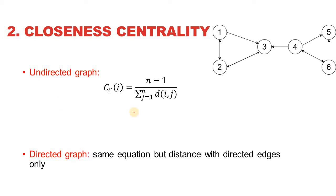In order to calculate the closeness centrality for any given node, considering the graph to be undirected, we can use the formula: closeness centrality of node i equals n minus 1 (where n is the total number of nodes) divided by the sum of shortest paths from the reference node i to all other nodes j.